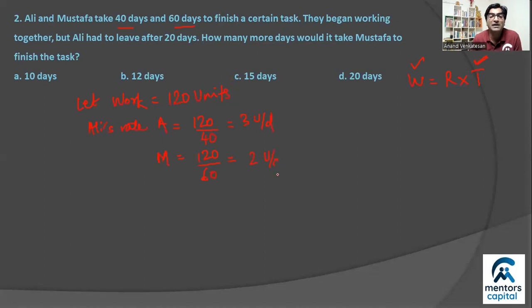And Mustafa ka rate M should be 120 divided by 60, two units every day. So two individual rates we got. Question is saying they begin working together, but Ali left after 20 days. So Ali works for 20 days, whereas Mustafa continues to work and finish the task. Which means Mustafa works for the 20 days and then a few more days. Let's say Mustafa works for x days.